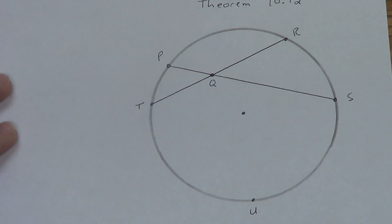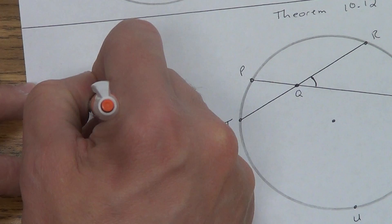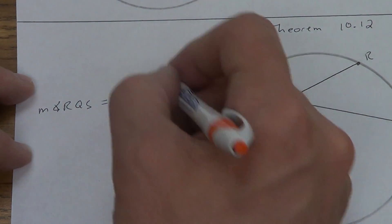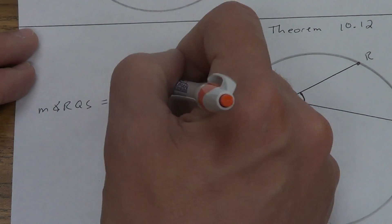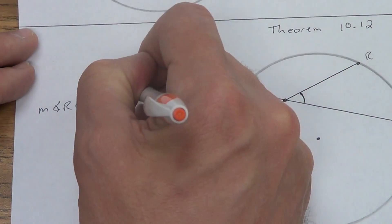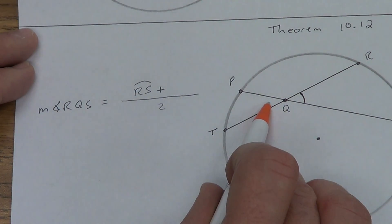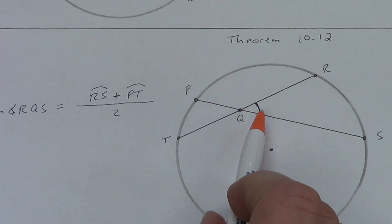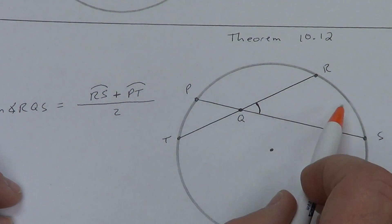Let's think about what the theorem says. The measure of angle RQS equals one-half — as a fraction with two in the denominator — the sum of the arcs. As we move out with our rays, we intercept arc RS, and its vertical angle intercepts arc PT. So the formula is: measure of angle RQS equals (arc RS + arc PT) / 2. That's the average of the two arcs.